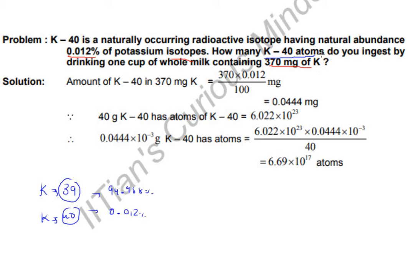First, this is 370 mg of K, right? This is potassium, not potassium-40. So first we find how much is potassium-40, having atomic weight 40. The percentage is 0.012%. The amount of K-40 in 370 mg is 370 times this percent: 0.012 upon 100, which gives us 0.0444 mg of K-40.